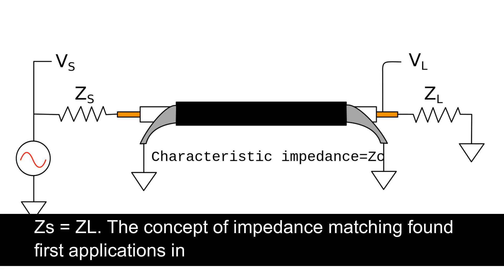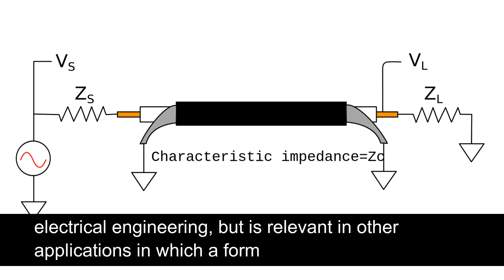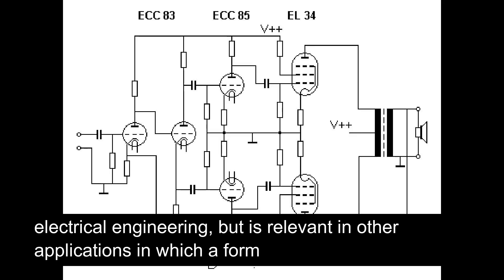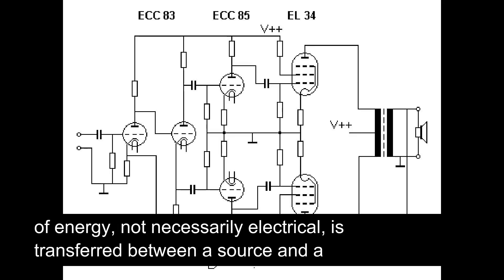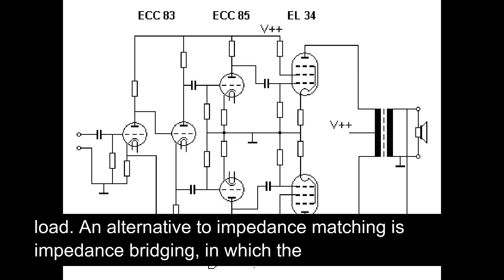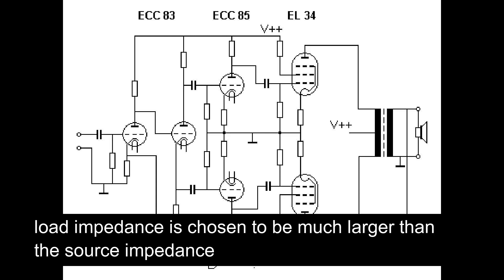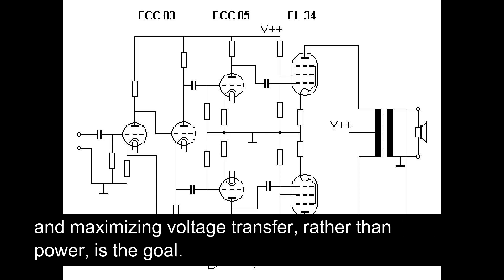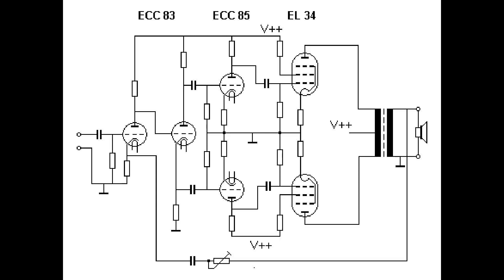The concept of impedance matching found its first applications in electrical engineering, but is relevant in other applications in which a form of energy, not necessarily electrical, is transferred between a source and a load. An alternative to impedance matching is impedance bridging, in which the load impedance is chosen to be much larger than the source impedance and maximizing voltage transfer, rather than power, is the goal.